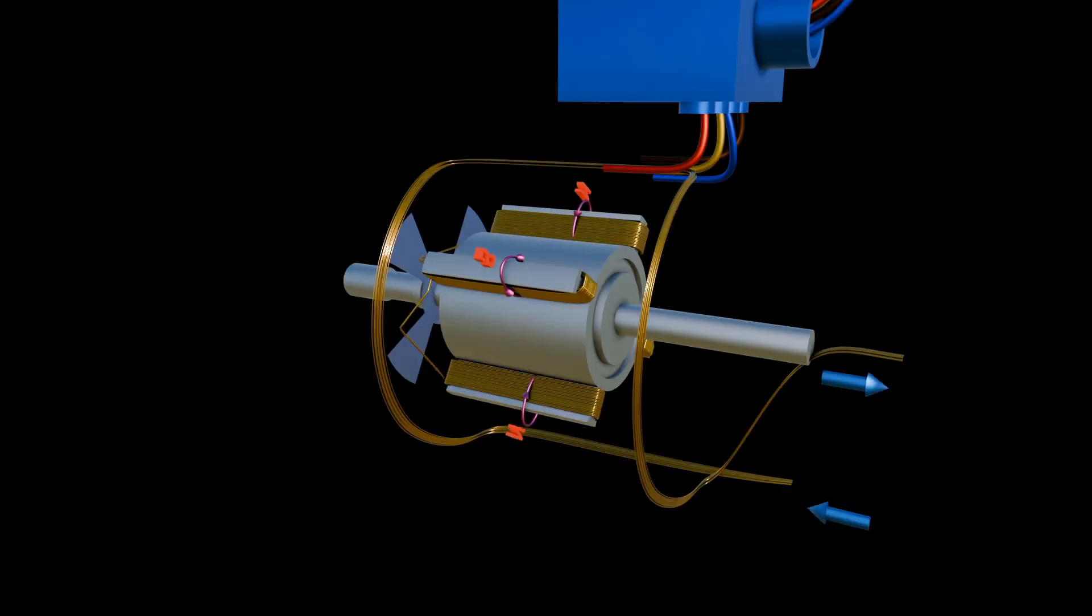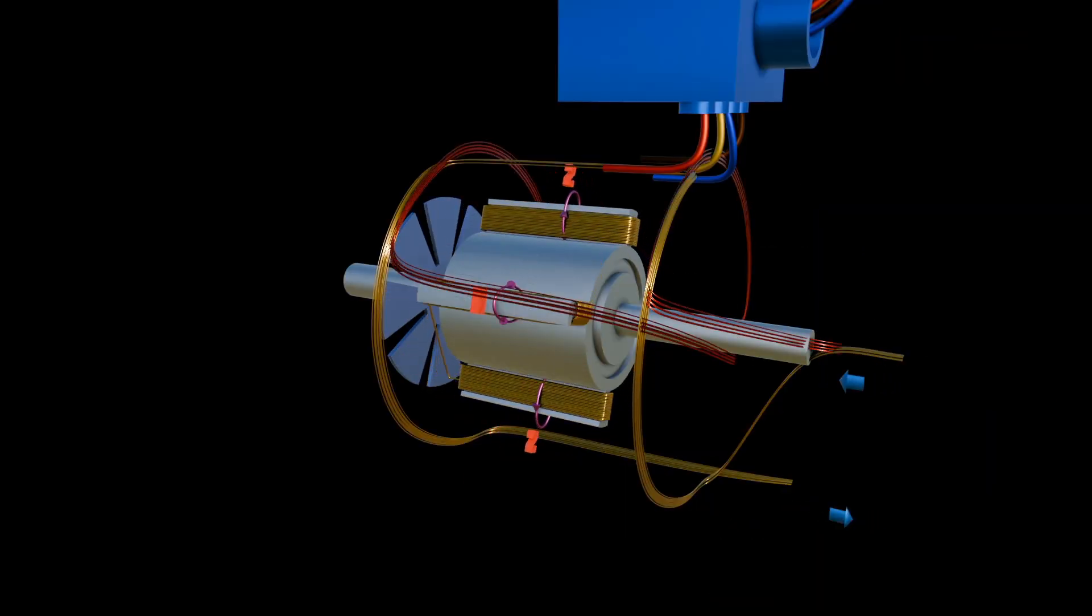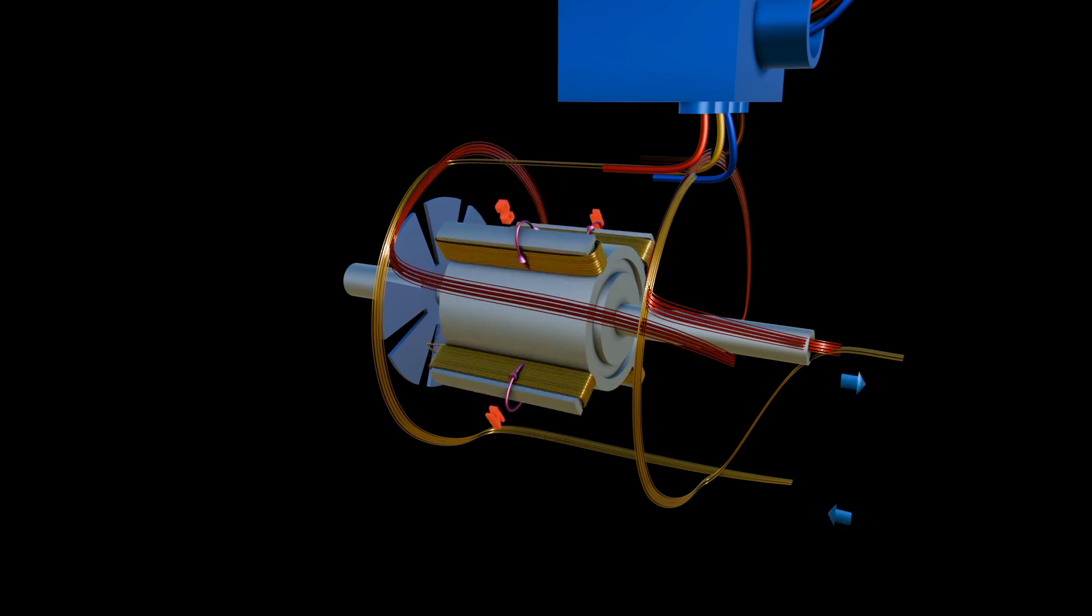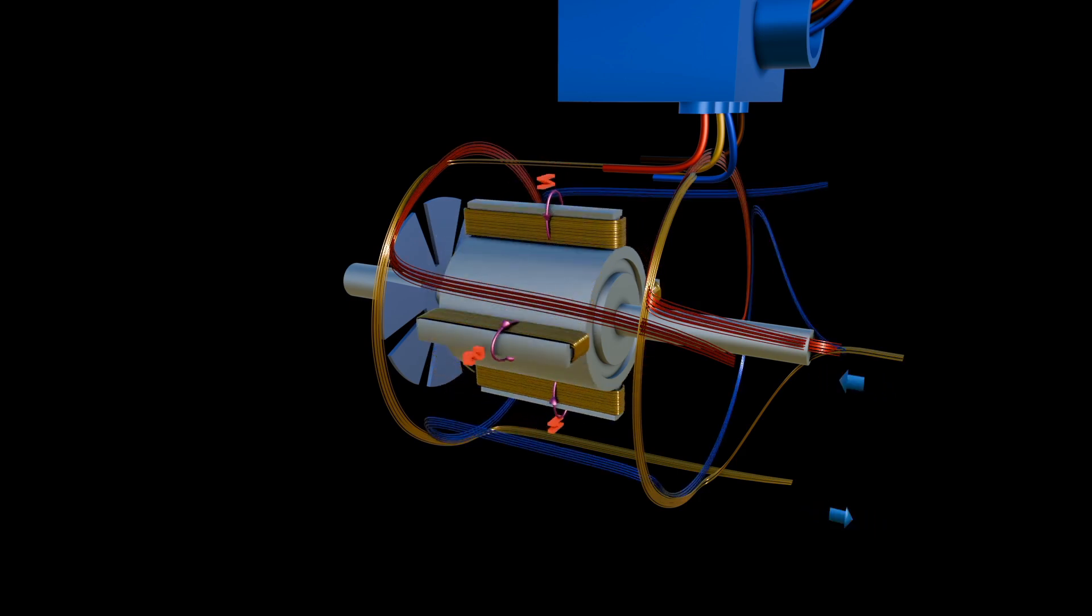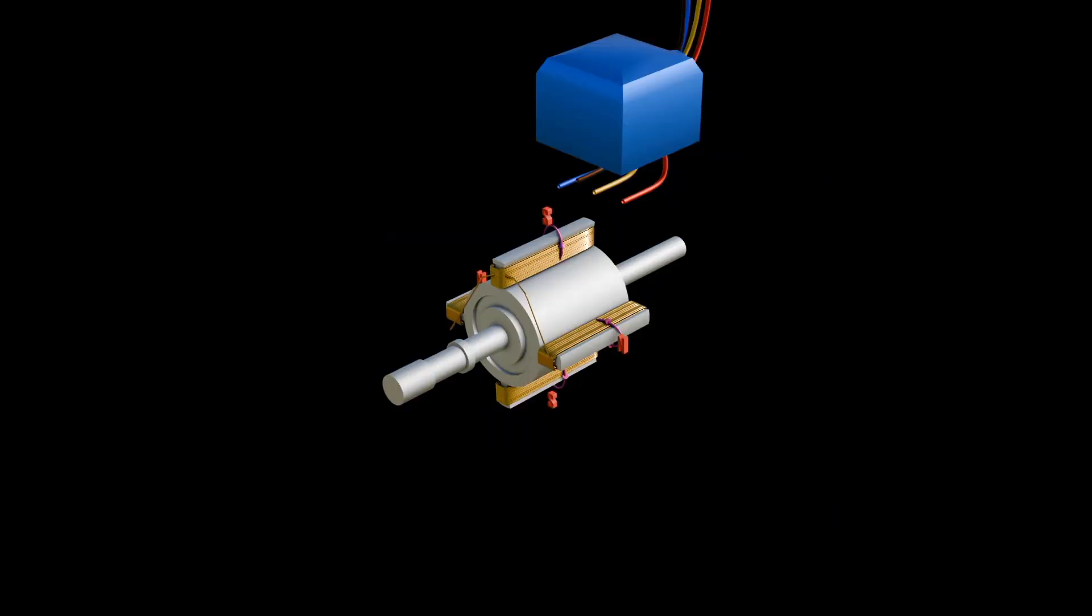Adding the second and third windings, displaced 120 degrees from each other, will form three-phase alternating electricity. One terminal from each of the windings is always connected together to form a star configuration.